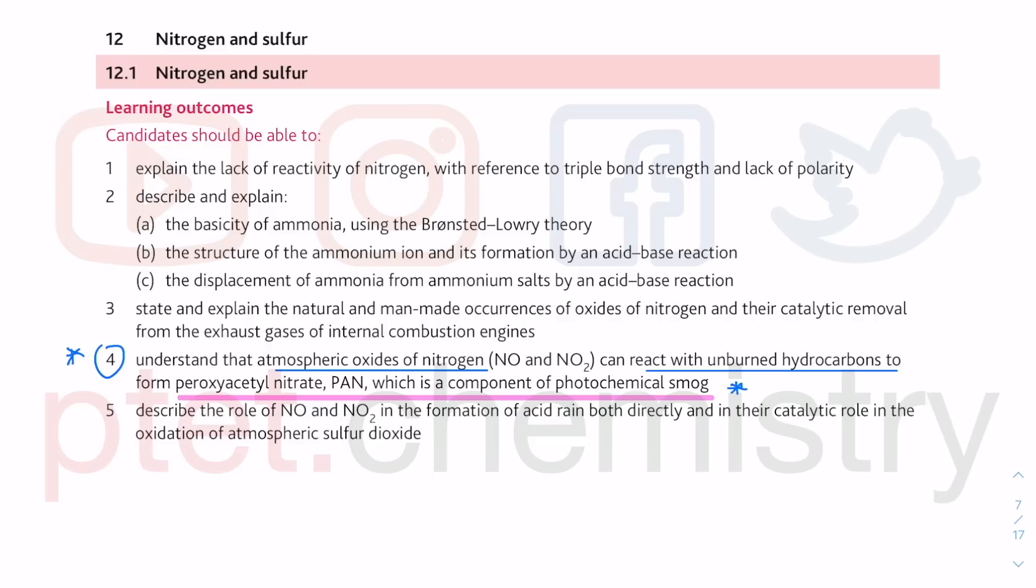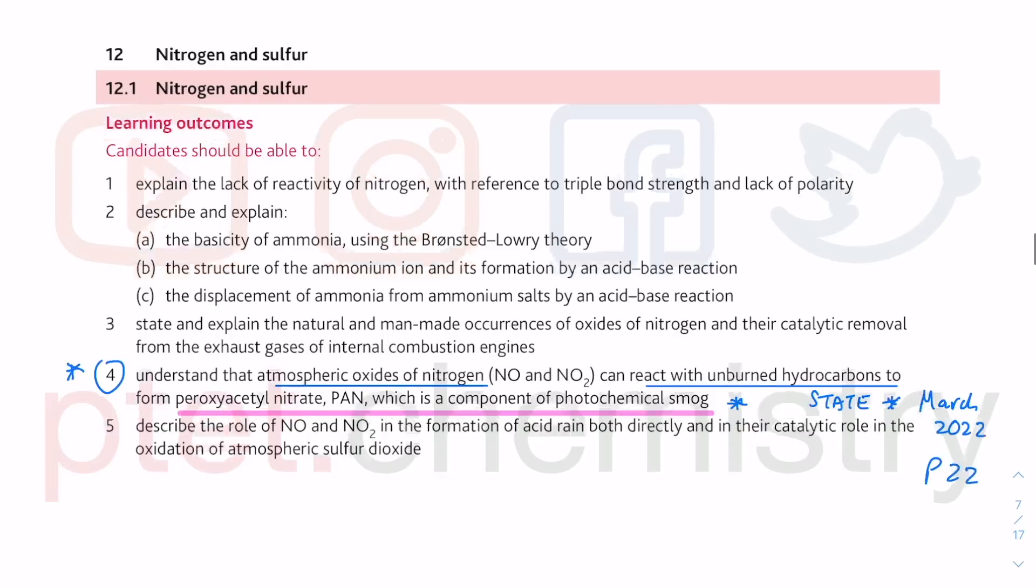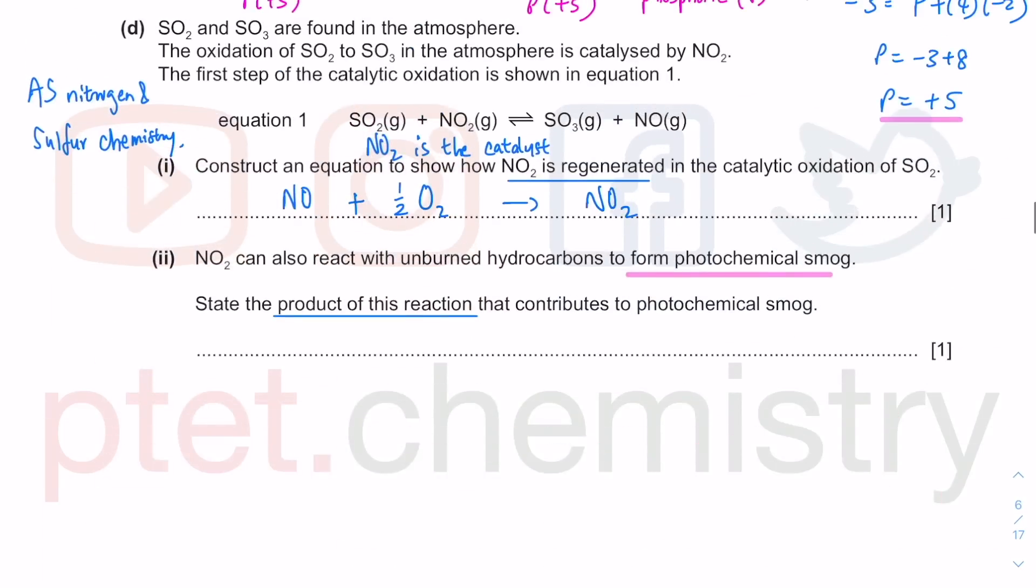They say 'state' in the previous question, the March 2022, very recent ones. The paper that we are doing right now, Paper 22, AS Paper. This AS component under inorganic chemistry: peroxyacetyl nitrate, PAN. I wonder if you write PAN whether you get the marks or not, but it is peroxyacetyl nitrate, short form PAN.